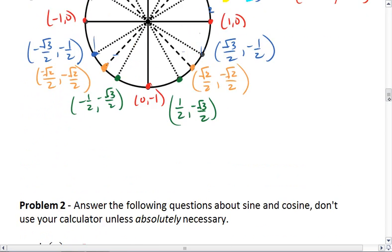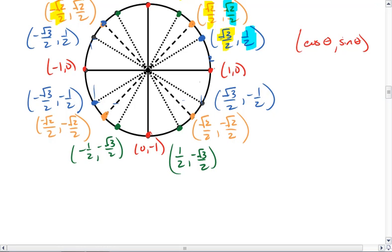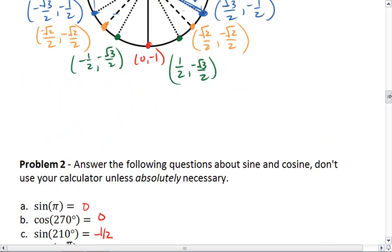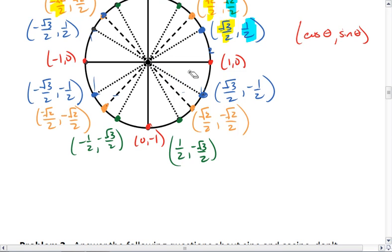Cosine of negative pi thirds. If it's a negative angle, we're going to go clockwise, pi thirds. That puts us to this blue dot. We want the cosine value. Oh, sorry, not that blue dot. That's pi 6. Pi thirds brings us to the green dot. We want cosine value. That's the x value. That's 1 half.